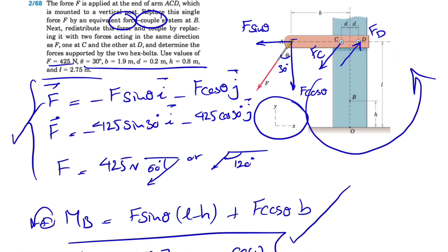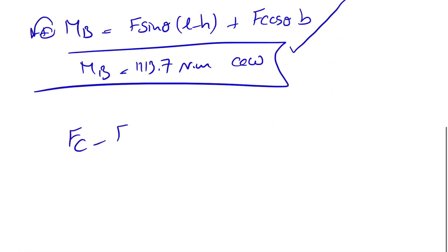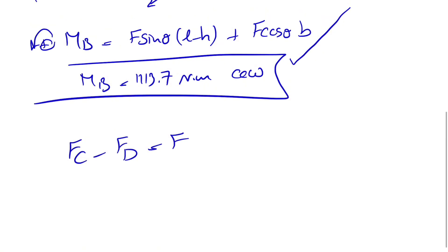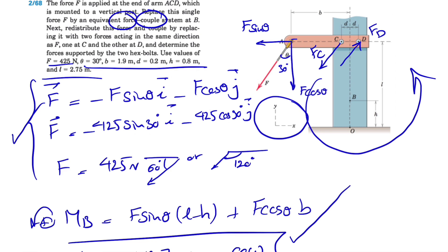We are replacing these two forces with our force-couple system, meaning there is only one F. The first condition is that Fc minus Fd must equal F to get the same force-couple system. Additionally, whatever moment F makes about any point — B, O, or otherwise — the two forces must make the same moment. It's easier to use point O because the moments of all horizontal components cancel out, simplifying the calculation.